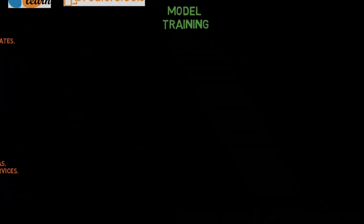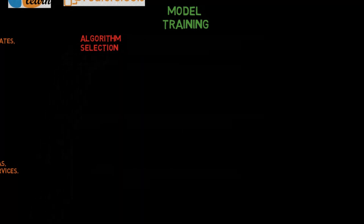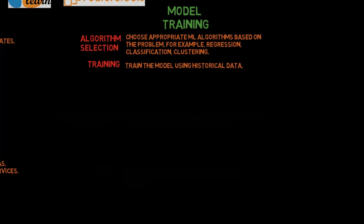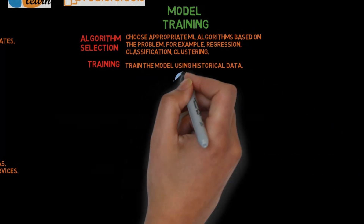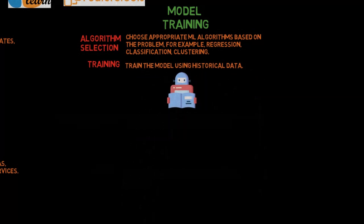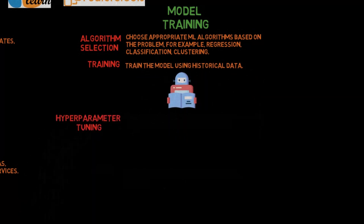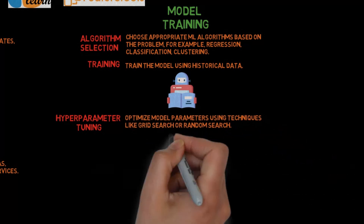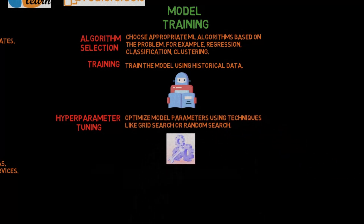Step 4: Model training. Algorithm selection: Choose appropriate machine learning algorithms based on the problem — for example, regression, classification, or clustering. Training: Train the model using historical data.